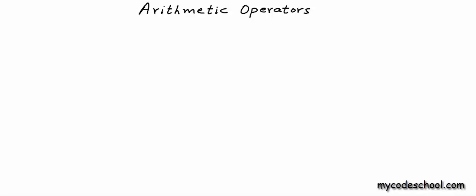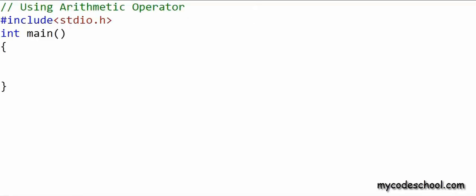In our previous lesson we saw how we can read input and print output using scanf and printf, and we also wrote a basic program to find the product of two numbers. Now in this lesson we will see in detail how we can use various arithmetic operators to perform calculations in our program. Let's get started by writing some code.